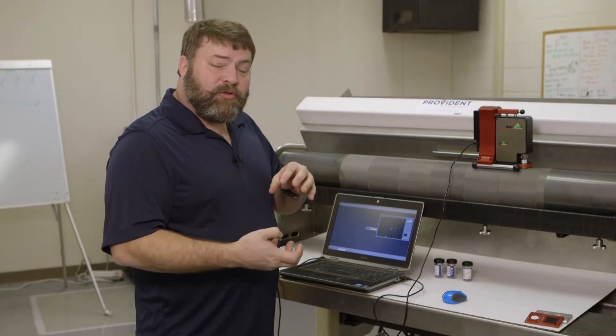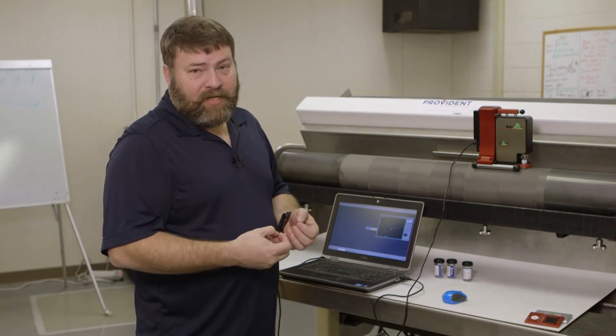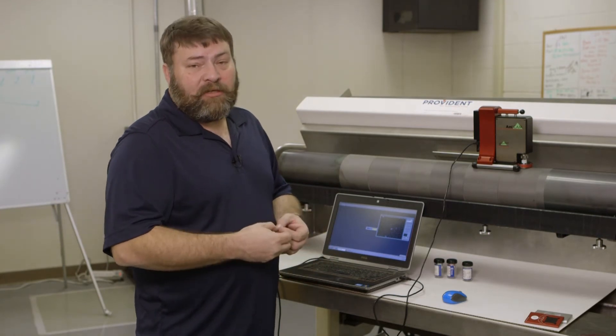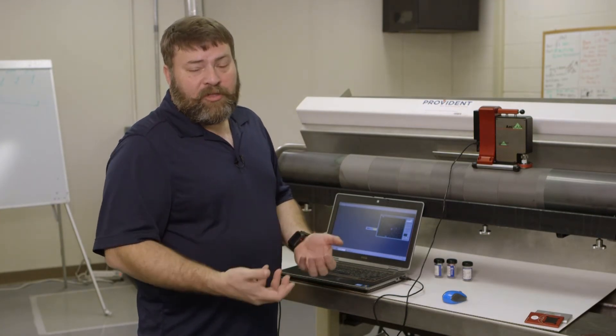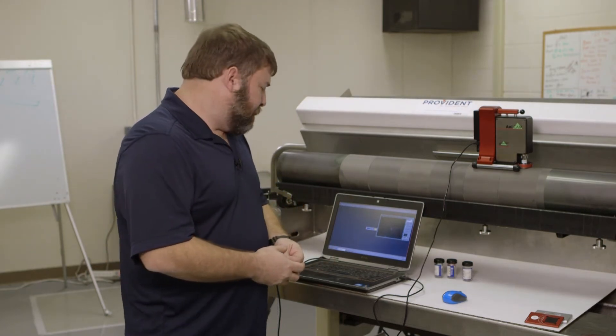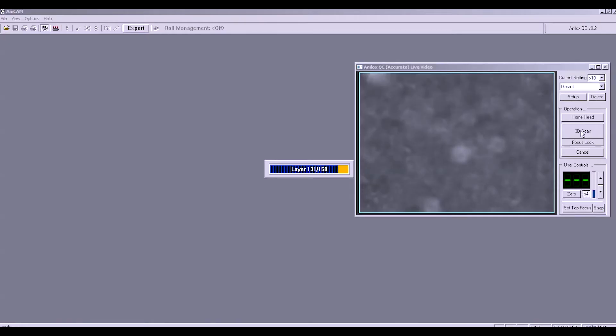Once all these pictures are captured by the computer, they're stored on top of each other and a three dimensional model is made. From that, it calculates the actual physical volume of the cells that it's looking at. It also gives us a three dimensional representation so that we can check for quality issues. So we're just about done with our 150th shot. When it does, it's going to give us our presentation. There we go.